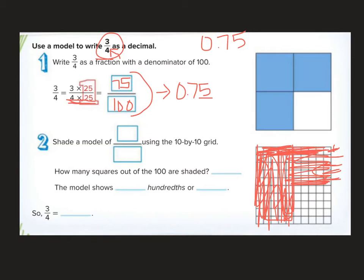Okay, so if we shaded a model of 75 out of 100, how many squares out of the hundreds are shaded? 75 are. The model shows 75 hundredths or 75 hundredths. So 3 fourths written into decimal form is 75 hundredths. Okay, let's look at another one.